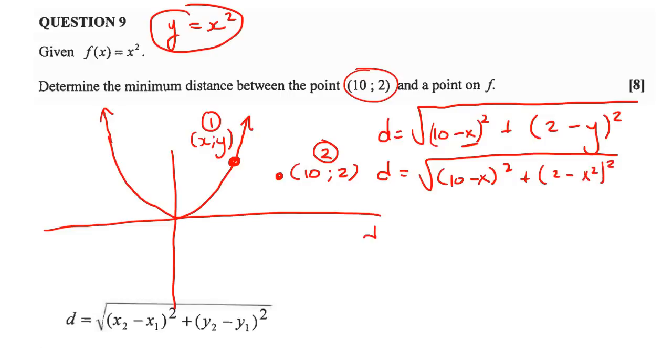So we have 10 minus x squared plus 2 minus x squared to the power of two. Okay. Now I'm just going to go neaten everything up inside that square root. And so if you had to multiply the brackets out, you're going to get 100 minus 20x plus x squared, plus 4 minus 4x squared plus x to the power of four.